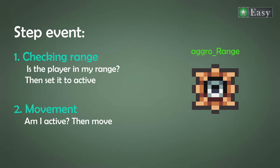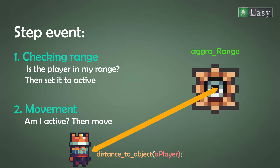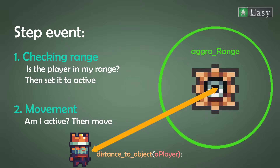Is there an object with the name oPlayer? And if yes, is the player object in the aggression range? If those two statements are true, we toggle isActive to true, else to false so it stays docile. The distance_to_object is returning a real number which we compare to the aggression range.